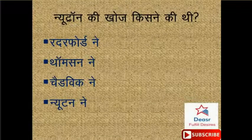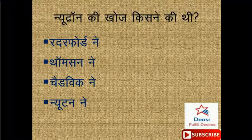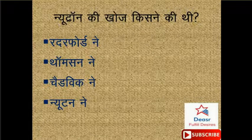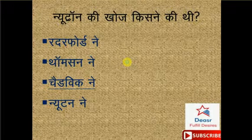Neutron ki khoj kisne ki thi? Options hain hamare paas: Rutherford, Thomson, Chadwick, Newton. Iska sahih jawab hai Chadwick ne.